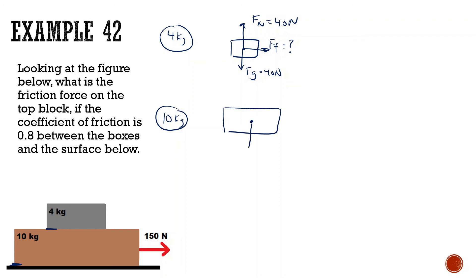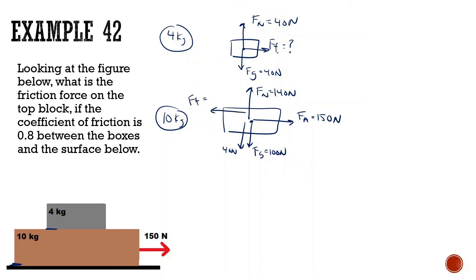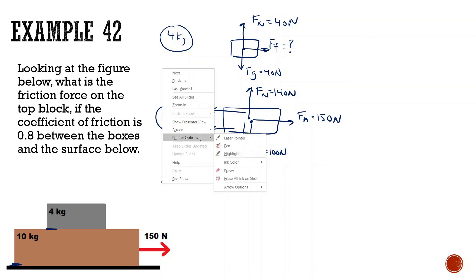We're not going to just do 40 times 0.8 because that would give us the maximum force of friction, and we don't know if we'll be using the maximum yet. For the 10 kilogram block: force of gravity is 100 newtons, the four kilogram block pushes down with 40 newtons, and the normal force from the ground is 140 newtons. There's an applied force of 150 newtons, a force of friction from the top block, and a force of friction from the bottom. The maximum bottom friction is 140 times 0.8, which gives us 112 newtons.